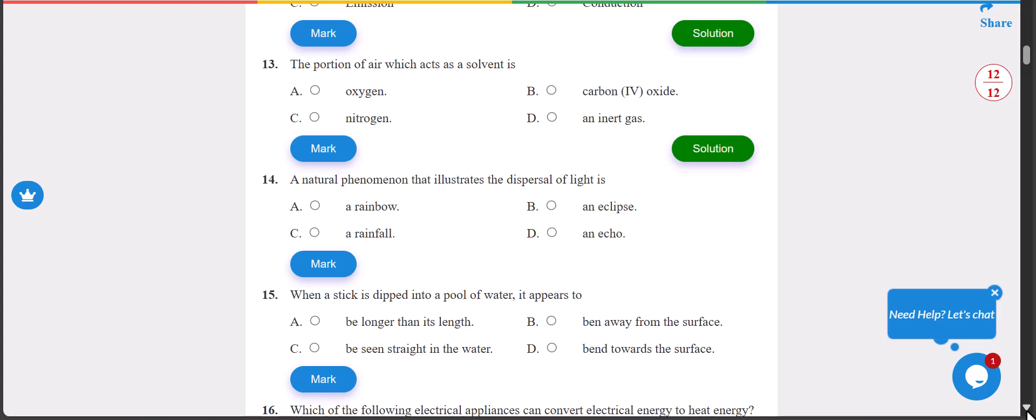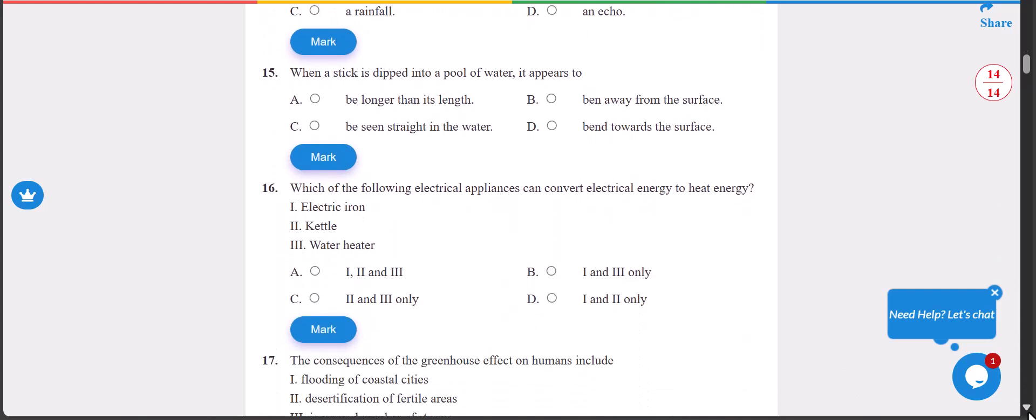Number 13: the portion of air which acts as a solvent is nitrogen. The answer is C. Number 14: a natural phenomenon that illustrates the dispersion of light is A, that is a rainbow. 14 is A, which is rainbow.